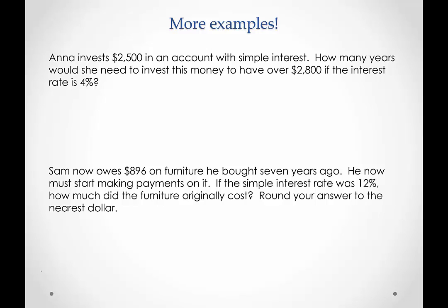So first we have Anna. Anna invests $2,500 in an account with simple interest. That sounds like our present value. How many years would she need to invest this money to have over $2,800 in the account if the interest rate is 4%? So she wants to have a total of $2,800. That's the future value. And here's our interest rate.